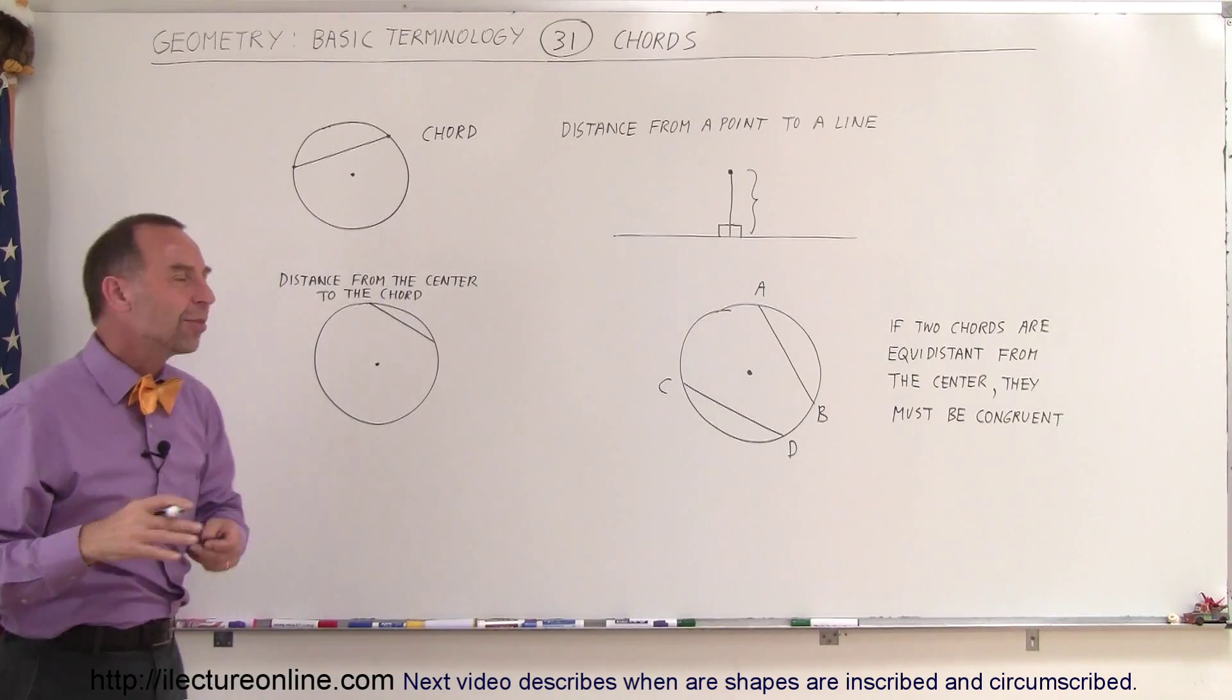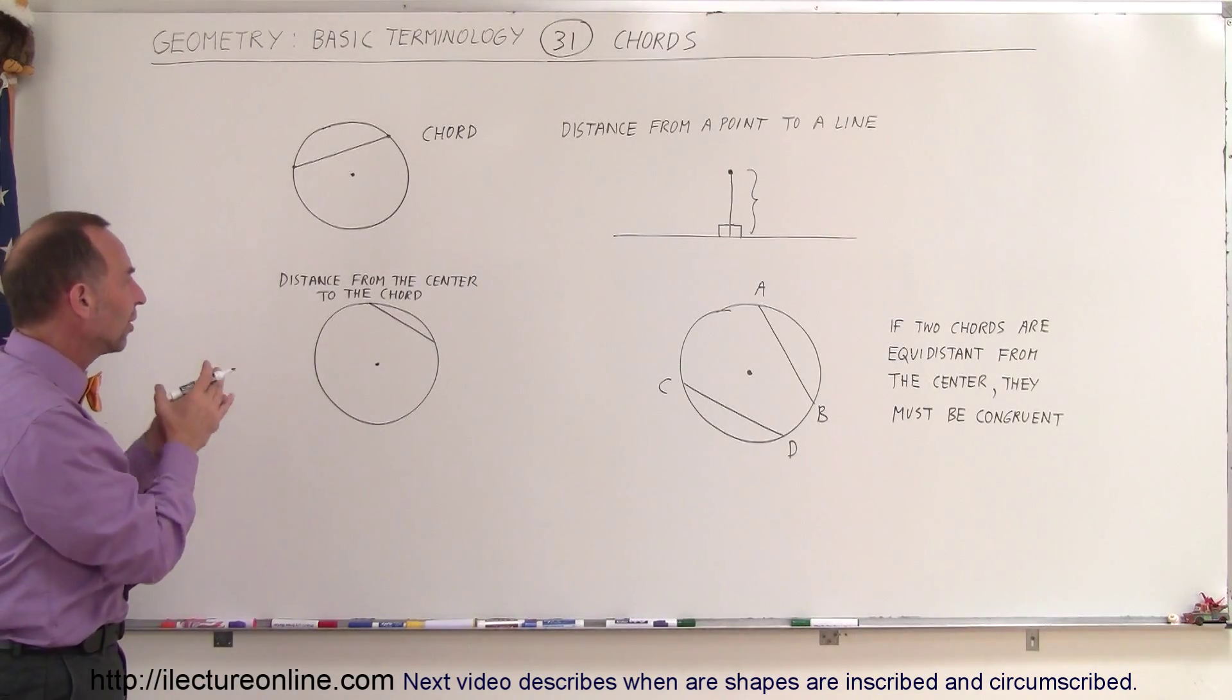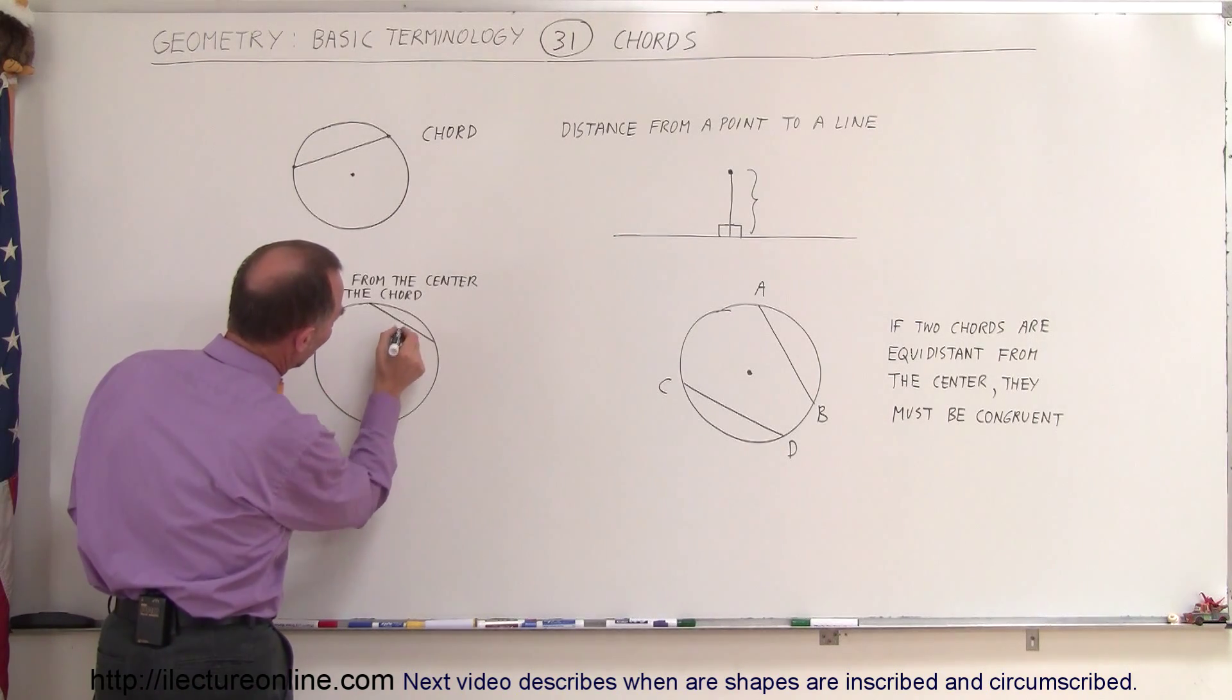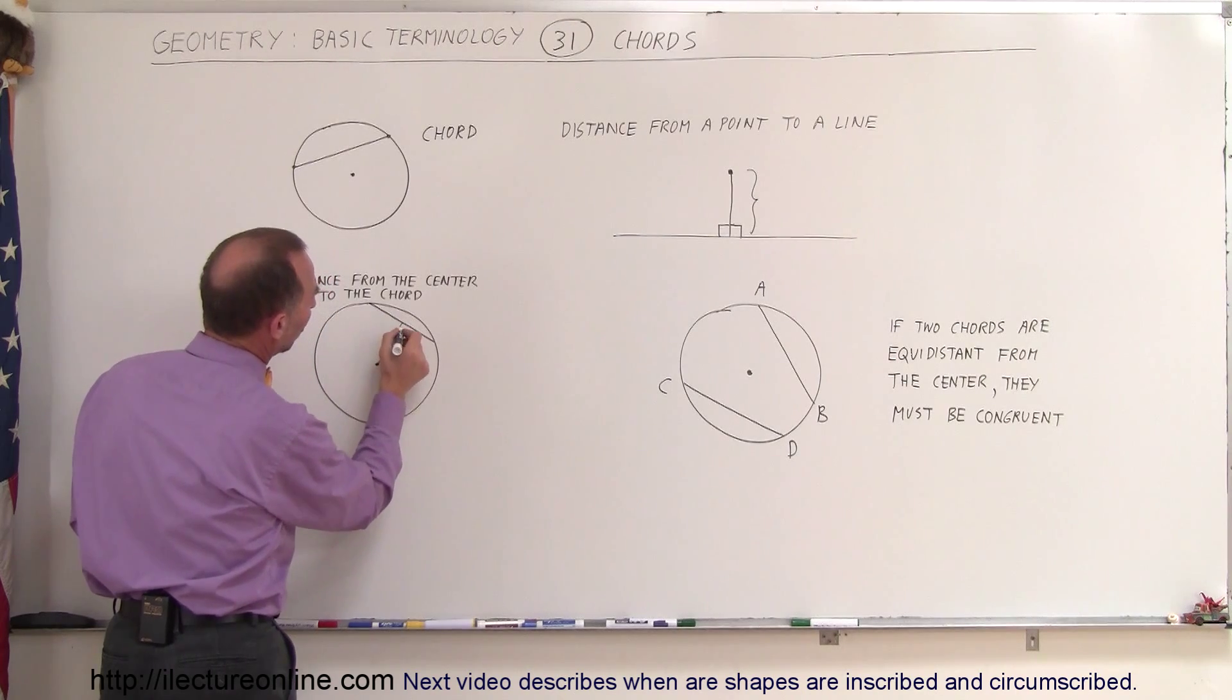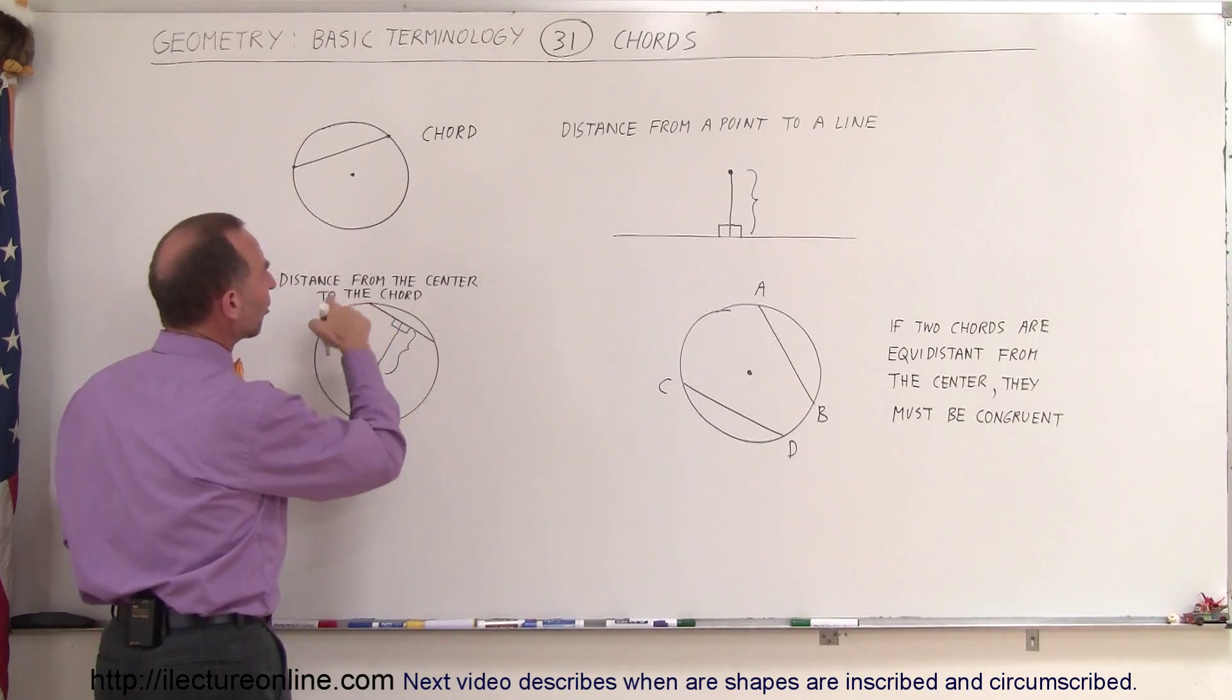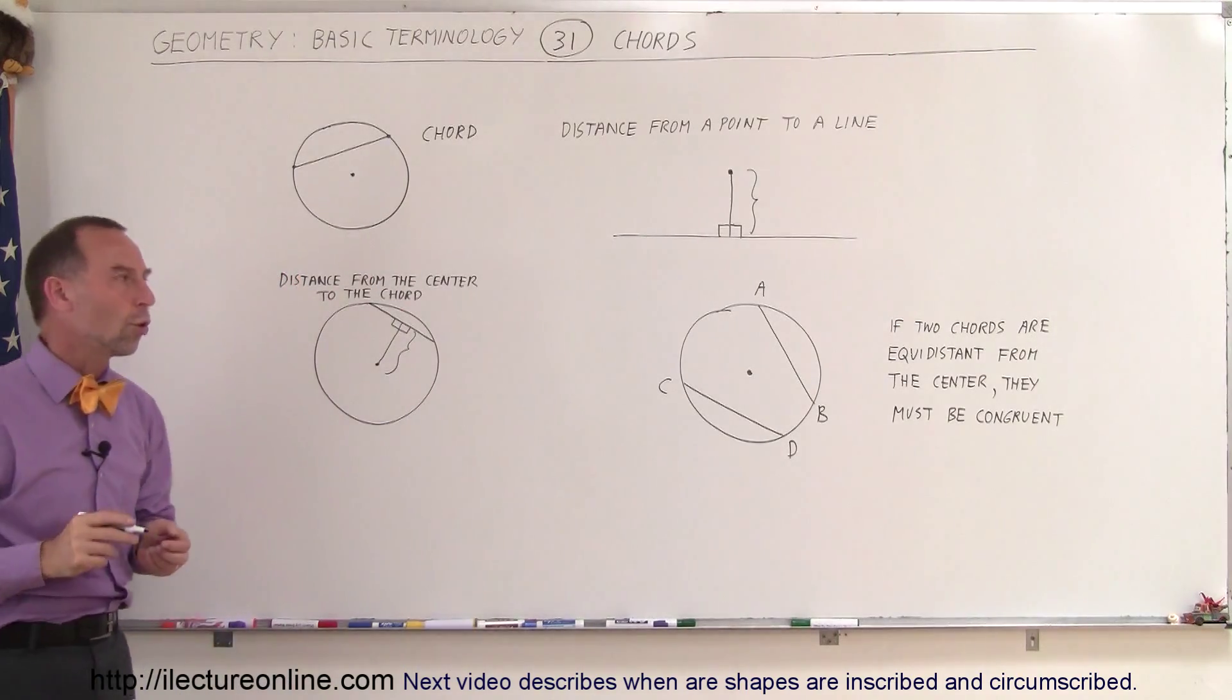If we use the same theory to consider the distance from the center of the circle to the chord, we do the same thing. We draw a line from the point to the chord in such a way that it reaches there perpendicular to that chord. This is perpendicular here, 90 degree angles, which means this then becomes the distance from the center of the circle to the chord.